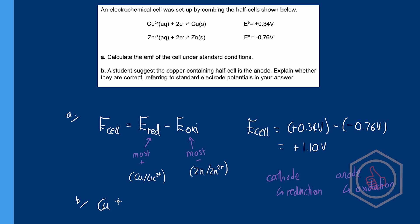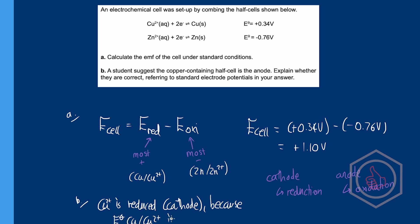Cu is reduced, so it is the cathode, because its electrode potential is more positive than the electrode potential for the zinc half cell. So the answer is no — the student is incorrect.